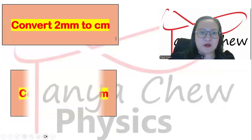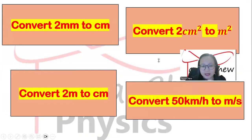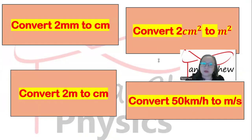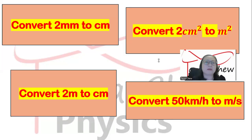First of all, these are very common questions that you would see. Convert 1mm to cm — sounds easy. Convert 2m to cm — sounds easy as well. Convert 2cm² to m² — sounds easy enough. Convert 50km per hour to meter per second — also not that hard. But how come most students make countless mistakes in this kind of conversion? I'm going to talk about that in this video.